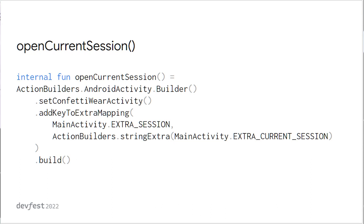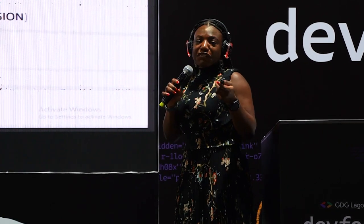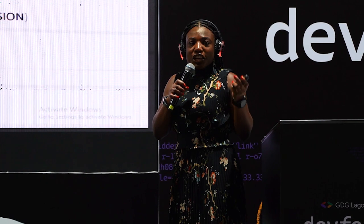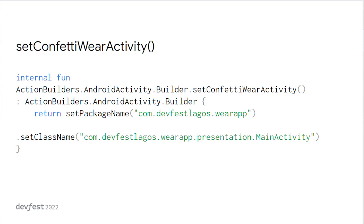The openCurrentSession method uses ActionBuilders.Builder to set a ComponentActivity, with key-to-extra mappings to ensure you're opening the correct screen. You can use the Intent the same way we use Intents on Android to pass data between screens — to customize whatever text or content you want displayed on that activity. We return the package name of the Wear app — which is droidless.lagos.wearapp — and set the class name to MainActivity in the presentation package.